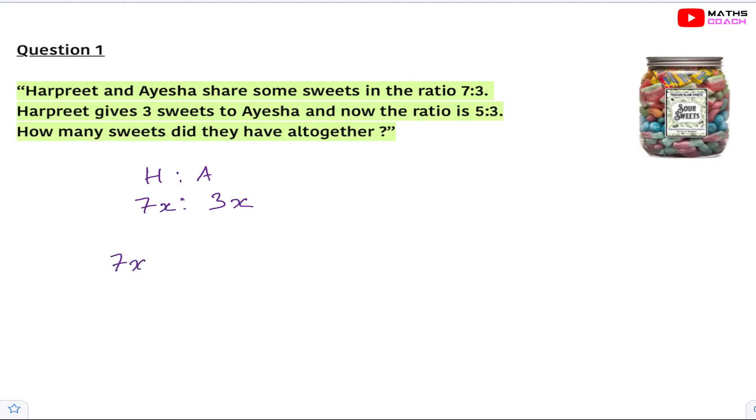Well Harpreet will lose 3 sweets so it becomes 7x minus 3, and Ayesha will gain 3 sweets so it becomes 3x plus 3. Now this new ratio is represented by 5 to 3. So we are now going to be looking at this more closely.